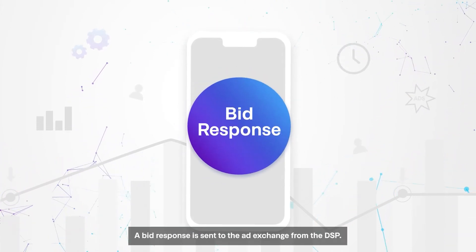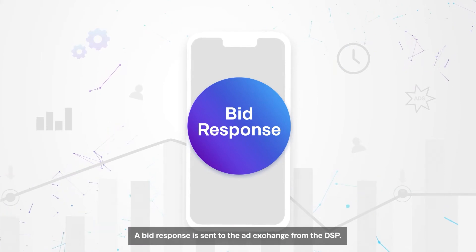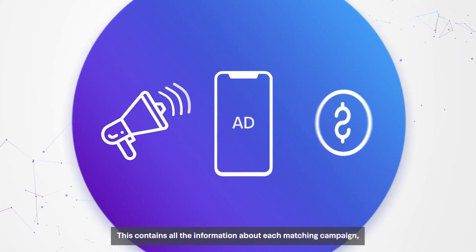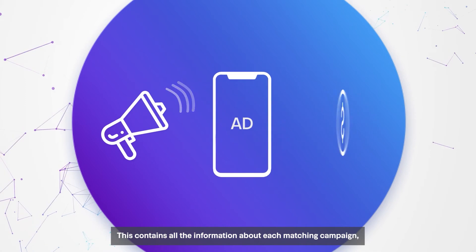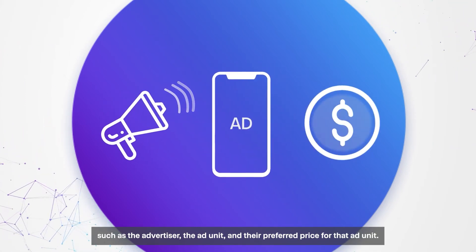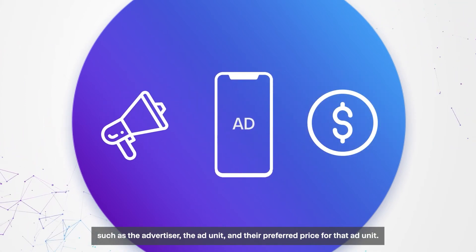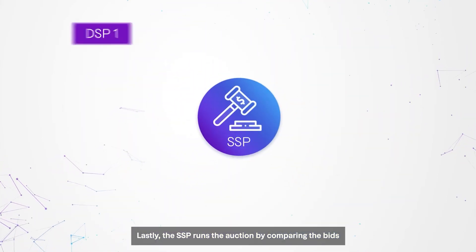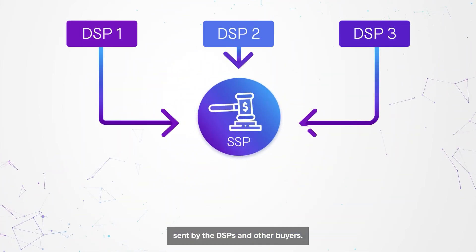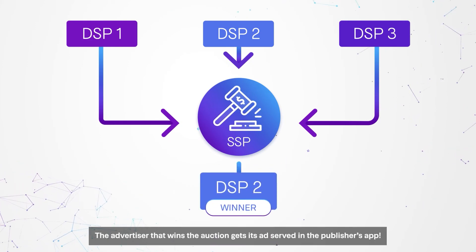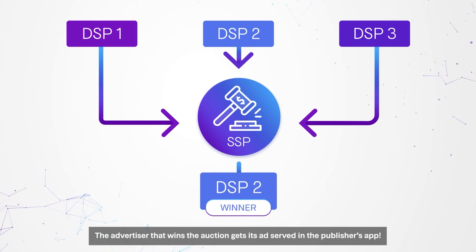The algorithms determine a bid on the ad impression for every advertiser with a matching campaign. A bid response is sent to the ad exchange from the DSP, containing all the information about each matching campaign — such as the advertiser, the ad unit, and the preferred price for that ad unit. Lastly, the SSP runs the auction by comparing the bids sent by the DSPs and other buyers. The advertiser that wins the auction gets its ad served in the publisher's app.